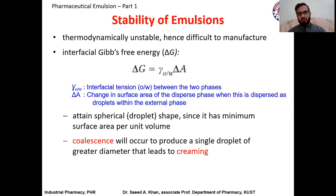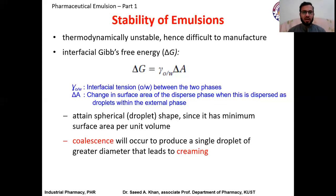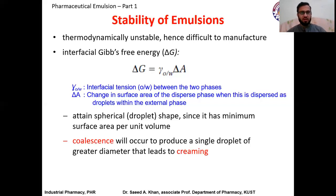Emulsions are thermodynamically unstable. This is evident from the equation showing that Gibbs free energy is directly proportional to the interfacial tension between the two phases and the change in surface area. The higher the interfacial tension, the higher the free energy and the tendency toward instability. The smaller and more numerous the droplets, the higher the surface area, the higher the Gibbs free energy, and therefore the more unstable the emulsion.